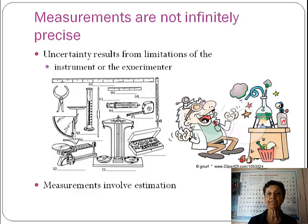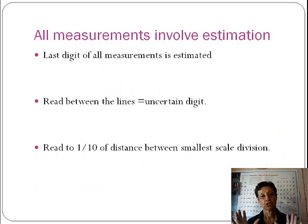Measurements involve estimation. So every measurement that you make will involve a little bit of estimation. The last digit will always be estimated. So I've already said the last digit is always an estimated number. You are going to take a measurement and you're going to read between the lines that are part of the instrument where there are no lines, and you're going to make an estimation of what number it would be.